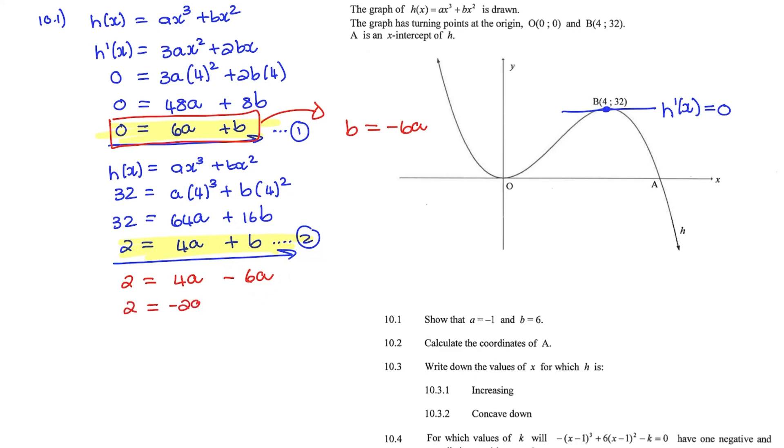And if I simplify, I have 2 equals negative 2A, therefore A is equal to negative 1. And that is the A value which we wanted to find.